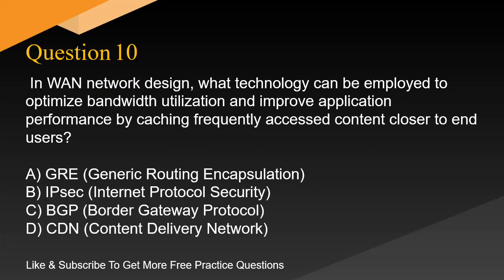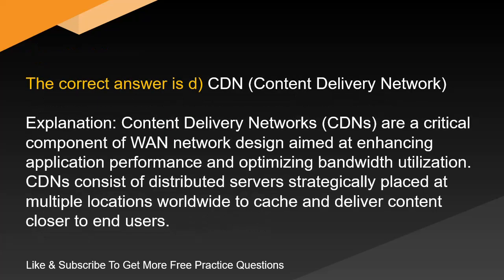Question 10. In WAN network design, what technology can be employed to optimize bandwidth utilization and improve application performance by caching frequently accessed content closer to end users? A. GRE, Generic Routing Encapsulation. B. IPSec, Internet Protocol Security. C. BGP, Border Gateway Protocol. D. CDN, Content Delivery Network. The correct answer is D: CDN, Content Delivery Network. CDNs are a critical component of WAN network design aimed at enhancing application performance and optimizing bandwidth utilization. CDNs consist of distributed servers strategically placed at multiple locations worldwide to cache and deliver content closer to end users.